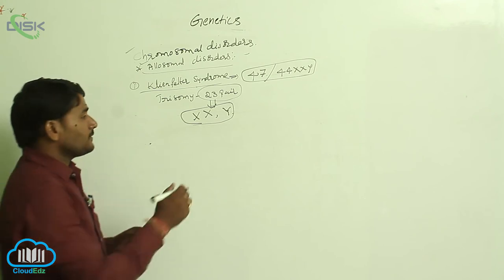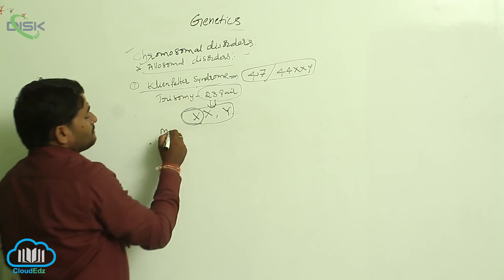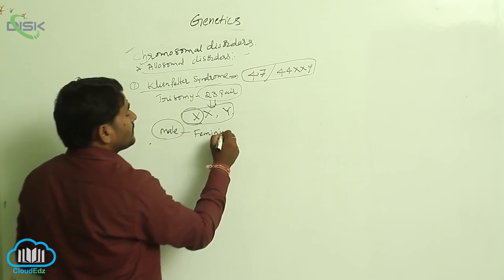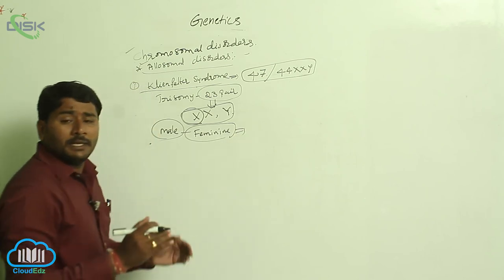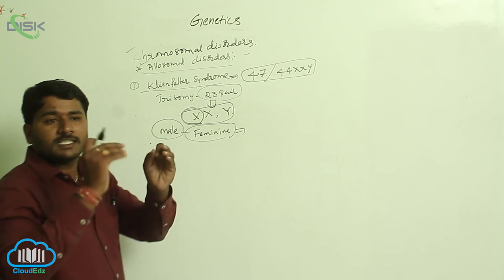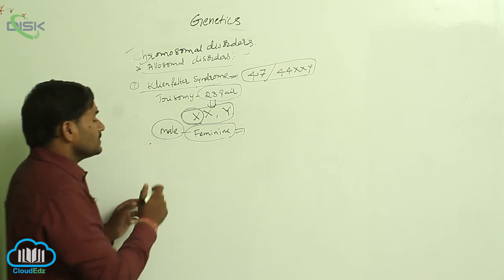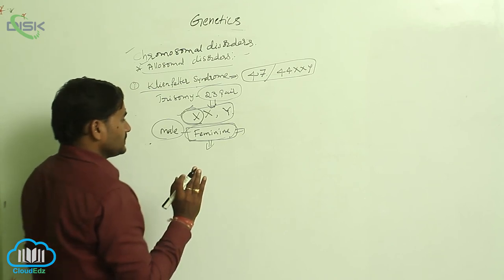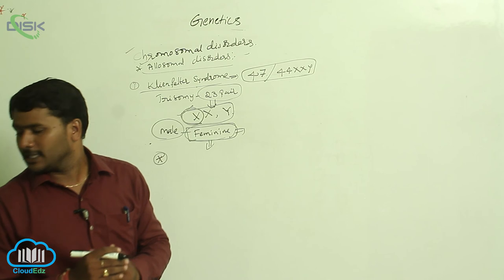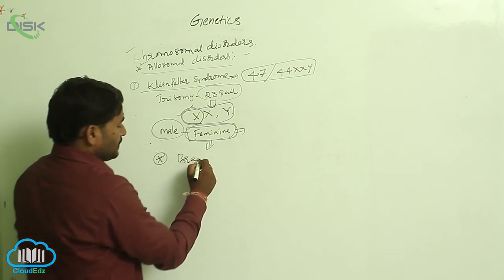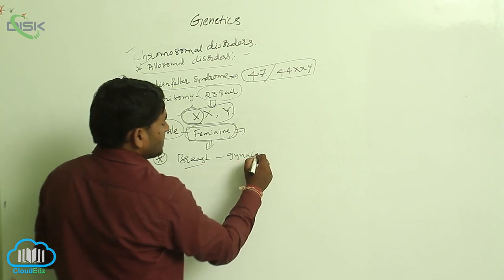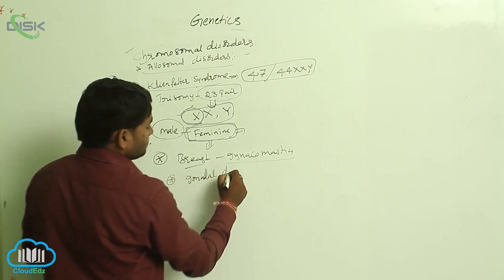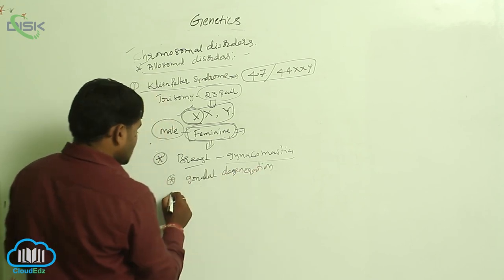Due to the presence of one extra X chromosome, Klinefelter is male, but feminine characters are not completely suppressed. The individual expresses some female characters, such as development of the breast, which is called gynecomastia. There is also gonadal dysgenesis or gonadal degeneration, and the individual is a sterile male.